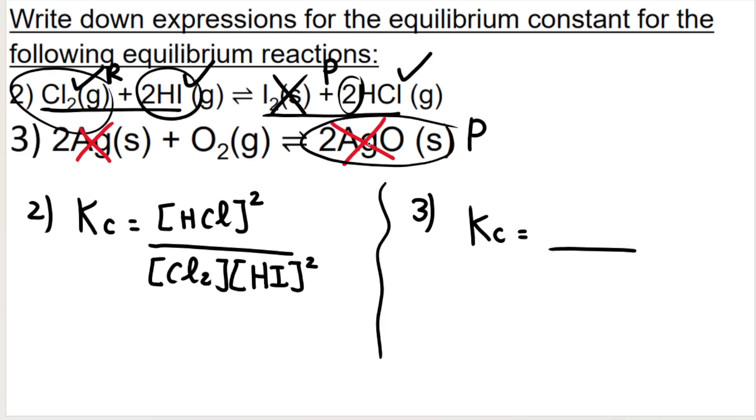But now it's a solid. It cannot go in your Kc expression. So technically, we don't have anything up here, so we're going to put a one up there. Very important. Here is a reactant and a reactant, but remember, the solid does not go in, so it's only oxygen gas, with no exponent, because the big number in front of it is one.